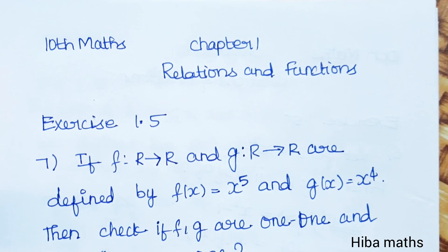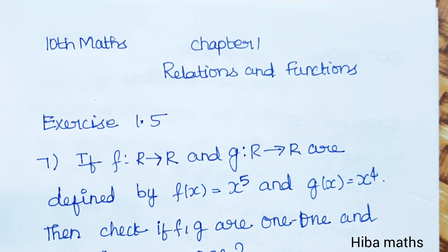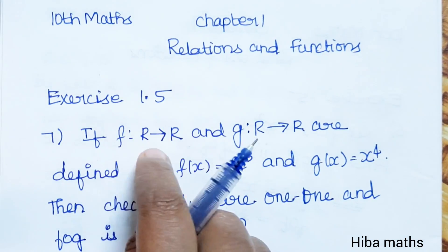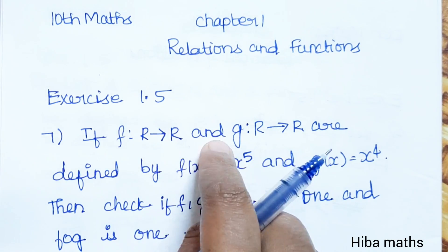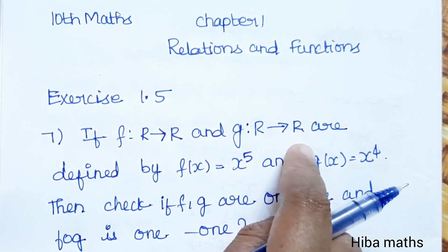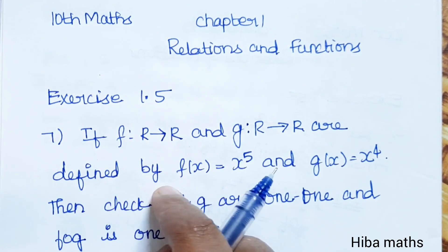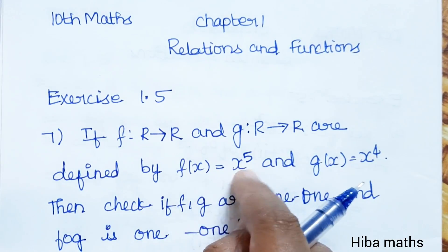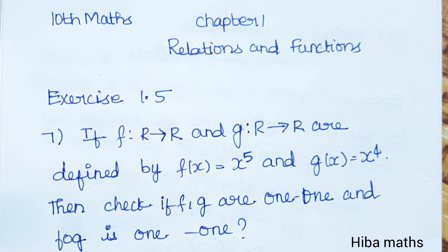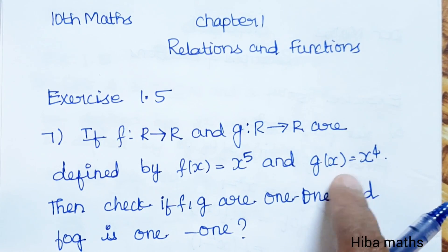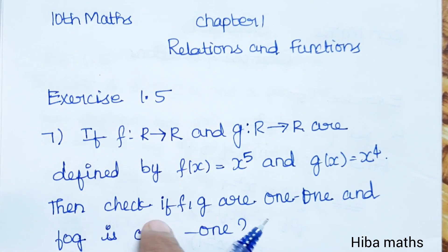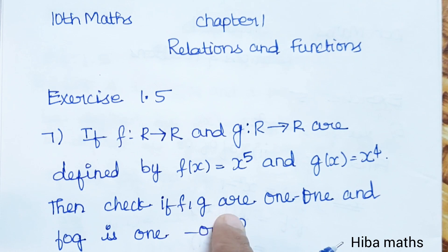Hello students, welcome to Hibamaks 10 Standard Math Chapter 1 Relations and Functions, question 1.57. If f: R→R and g: R→R are defined by f(x) = x^5 and g(x) = x^4, then check if f and g are one-to-one functions.